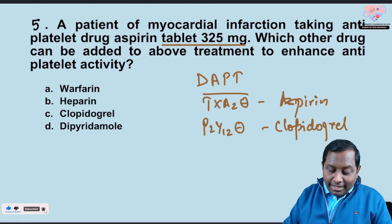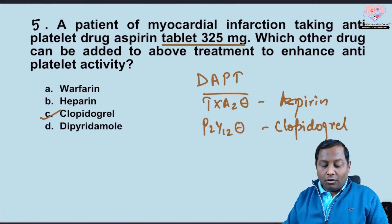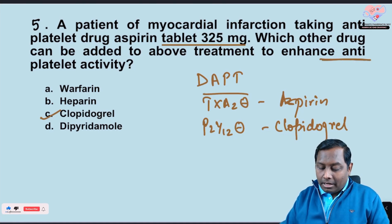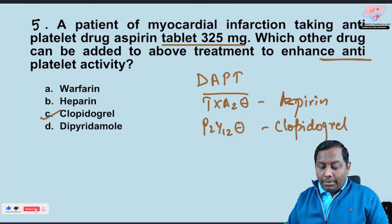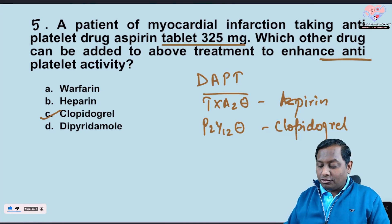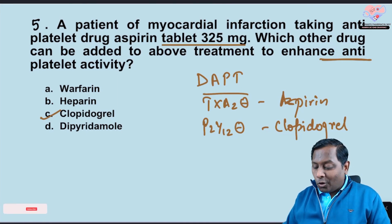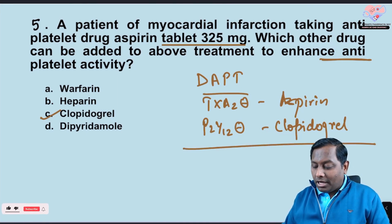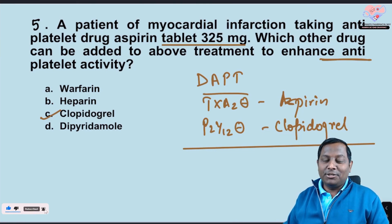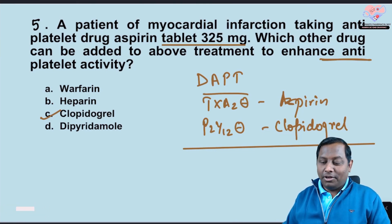Clopidogrel is the correct answer. Warfarin and heparin are anticoagulants — they are not antiplatelet drugs. Dipyridamole is a phosphodiesterase-3 inhibitor associated with coronary steal phenomenon; it is not preferred with the thromboxane A2 inhibitor. I hope all of you have enjoyed this Five MCQs in Five Minutes session.